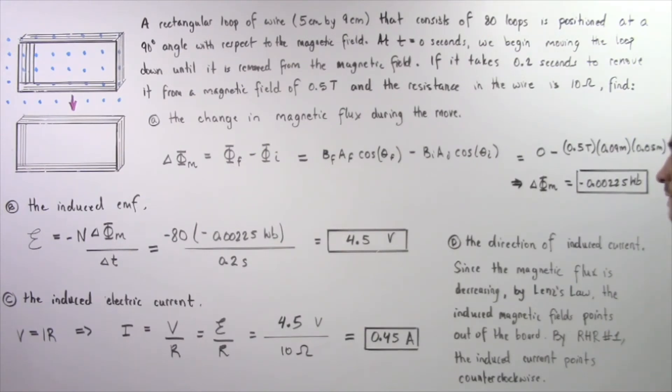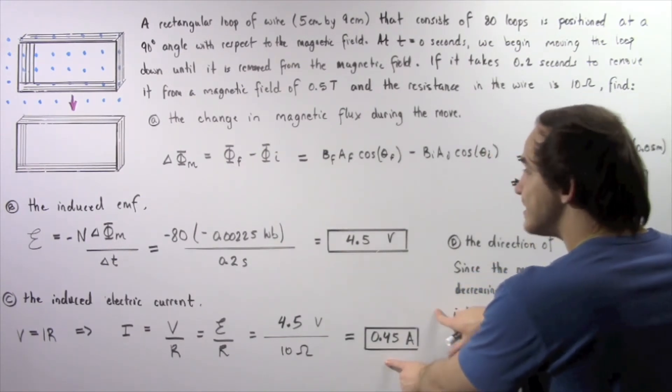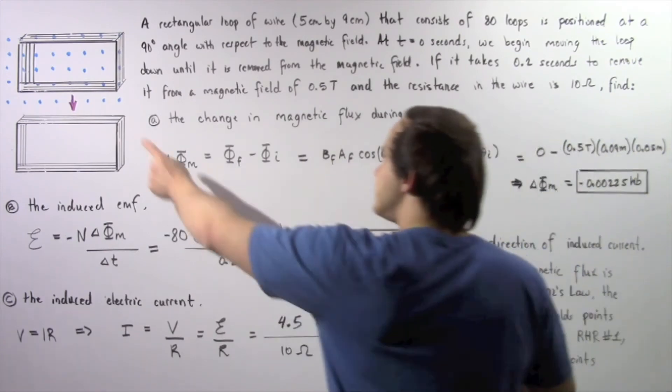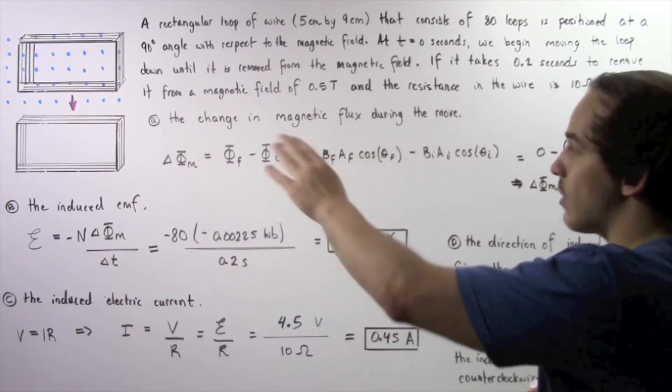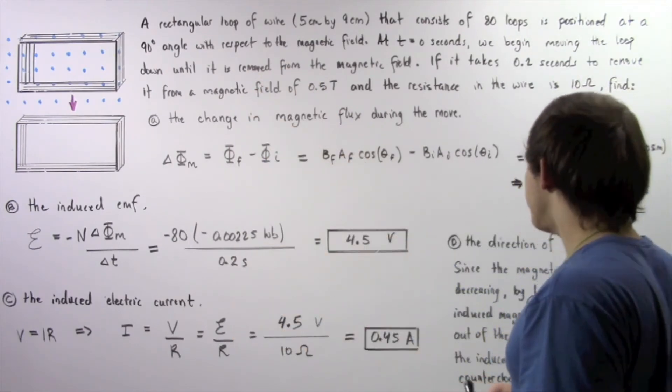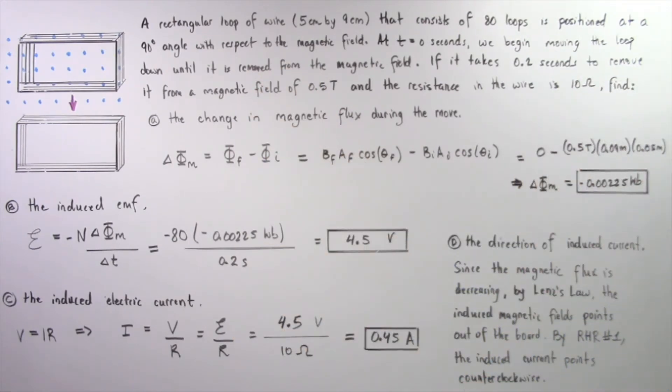So I is equal to our induced EMF 4.5 volts divided by the resistance of 10 ohms and that gives us an electric current of 0.45 amperes. So this is our induced current inside our wire as we move our wire, our loops of wire down. Now finally, let's move on to part D.